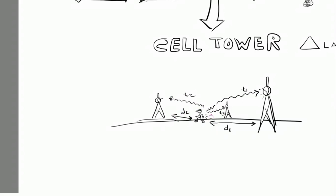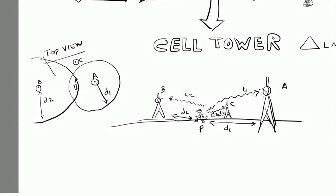In case if you have three such tower information of the distance available, you can easily find out from the top view what location it can be. If you have two cell towers you have a bigger area where you can be, but if the number of towers which overlaps the signals increases, it will give you more accurate results.